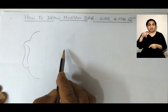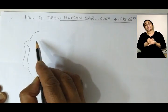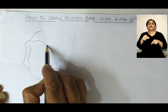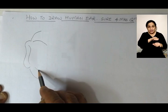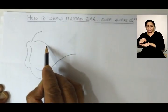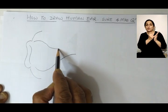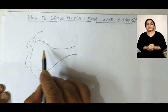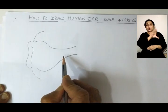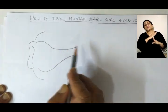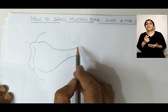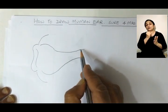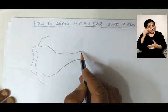Then it goes into the auditory canal. Draw the auditory canal — that is a curve like this, and then from here a little bit of bend like this. The auditory canal is preventing the outside dust from getting inside, and there are hairs in it which help collect the dust. That's how the wax is formed in the ear.